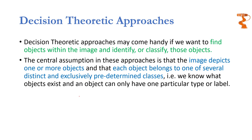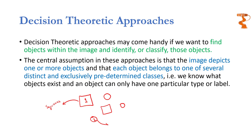Consider an example of classifying squares and circles. You have a certain number of squares and circles and you want to classify them. You come to the first object, you determine it is a square and place it in the category of squares. Then you move to the next object, determine it is a circle, and place it in the location reserved for circles. You repeat this for all objects, and at the end all squares are placed on one side and all circles on the other.